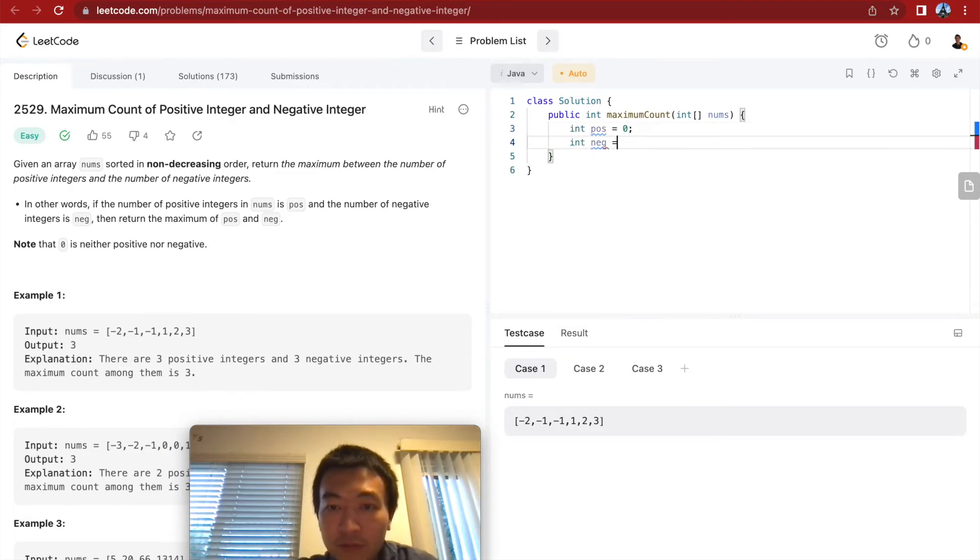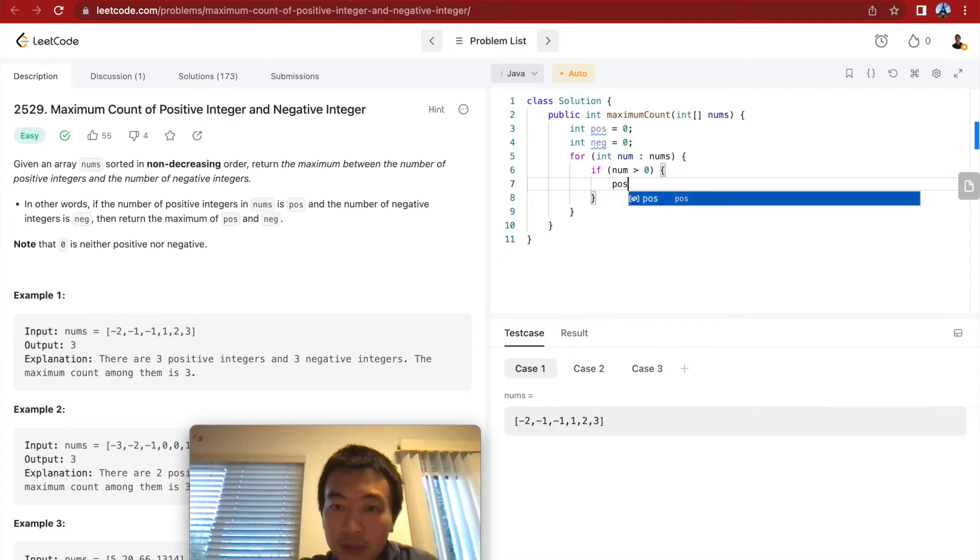Number of positives, number of negatives. Then, for num in nums, if num is greater than zero, positive plus one else. We need to have an if statement here, because it's possible there are zeros in the array. Zero is neither negative nor positive, right? So, more than zero, we'll increment negative. In the end, we'll just return the max of these two.